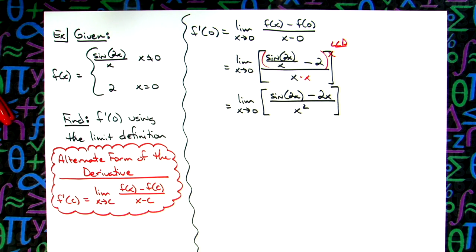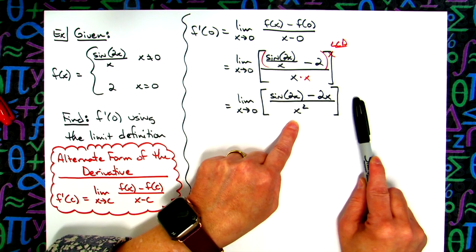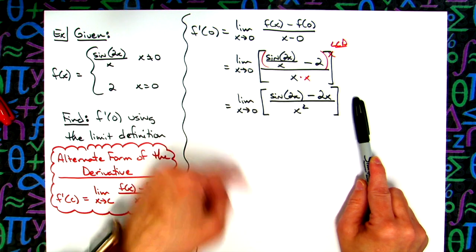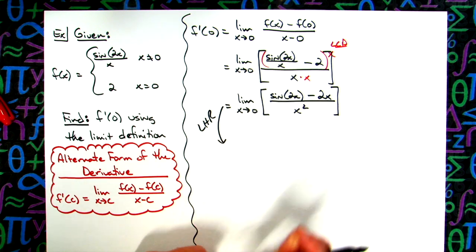Now from here, I think the easiest approach is going to be to do L'Hopital's rule. If I do a direct substitution here I am going to get 0 over 0, so then that means I can do L'Hopital's rule, so from here to here we're going to be doing L'Hopital's rule.